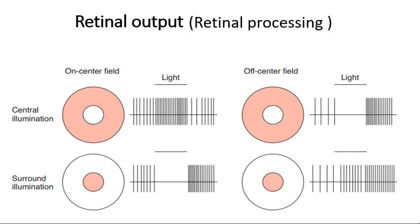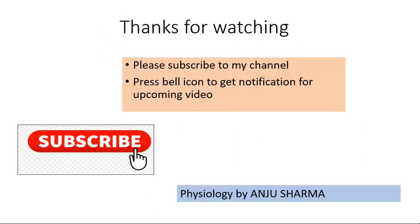In the next video we'll be talking about the visual pathway — how the signal is transmitted and how we perceive different components of an image, including color, shape, size, and contrast. Please subscribe if you haven't already. Thank you so much for watching.